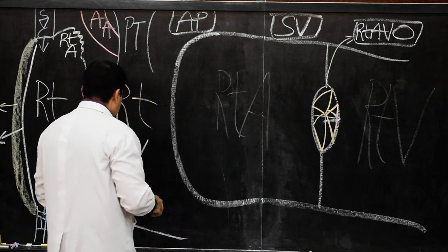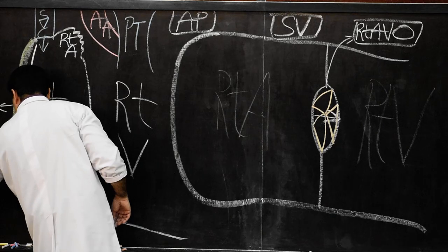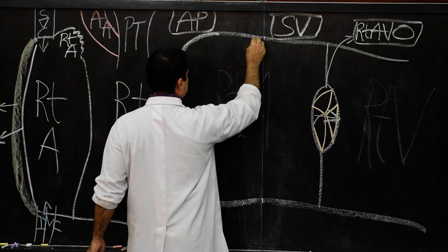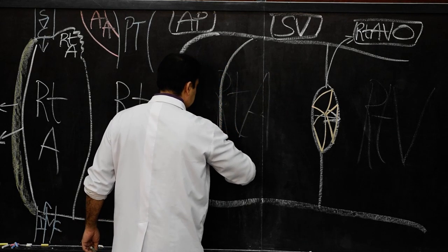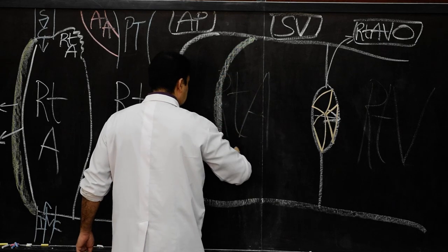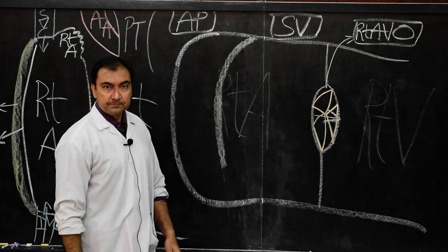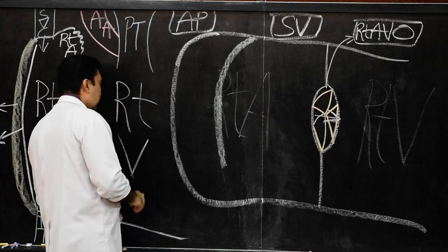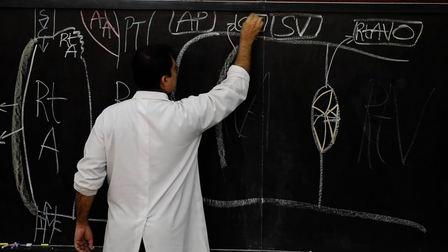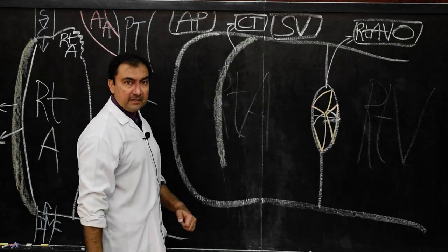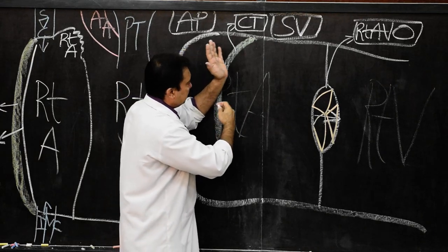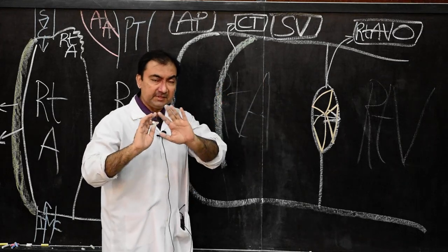Let us draw the crista terminalis in green color. This is the crista terminalis, dividing the interior of the right atrium into the anterior rough part called atrium proper and the posterior smooth part called sinus venarum.